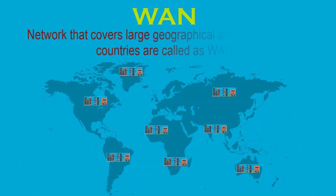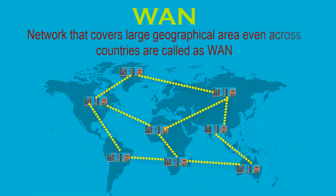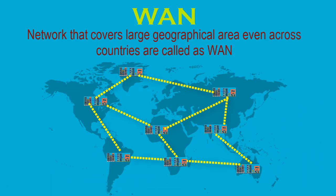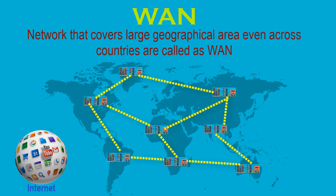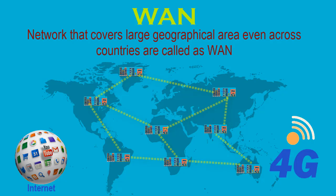Networks that cover large geographical areas, even across countries, are called WAN. The Internet is an example of a WAN and is the largest network. Another example is the 4G network, which is used across regions or countries, or private networks used by large corporations, banks or military.